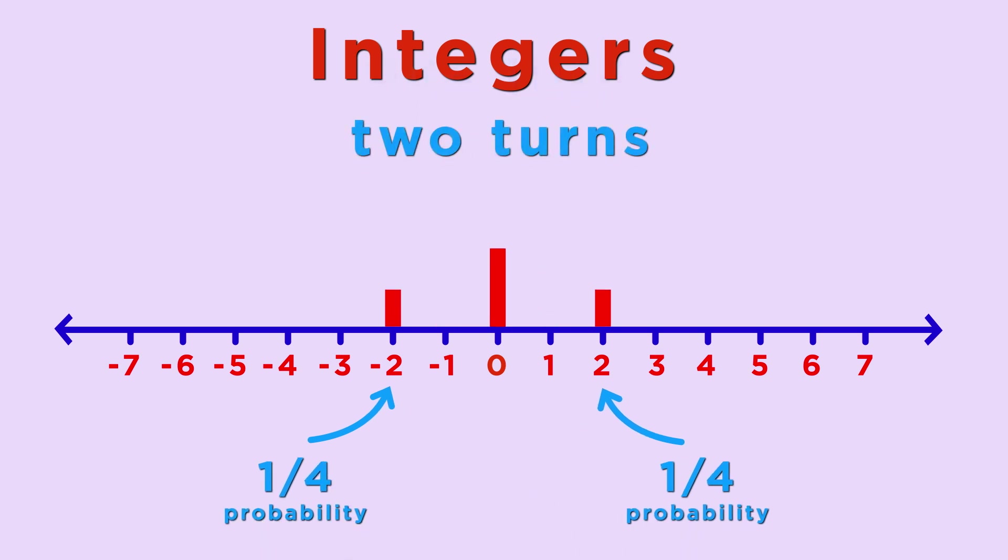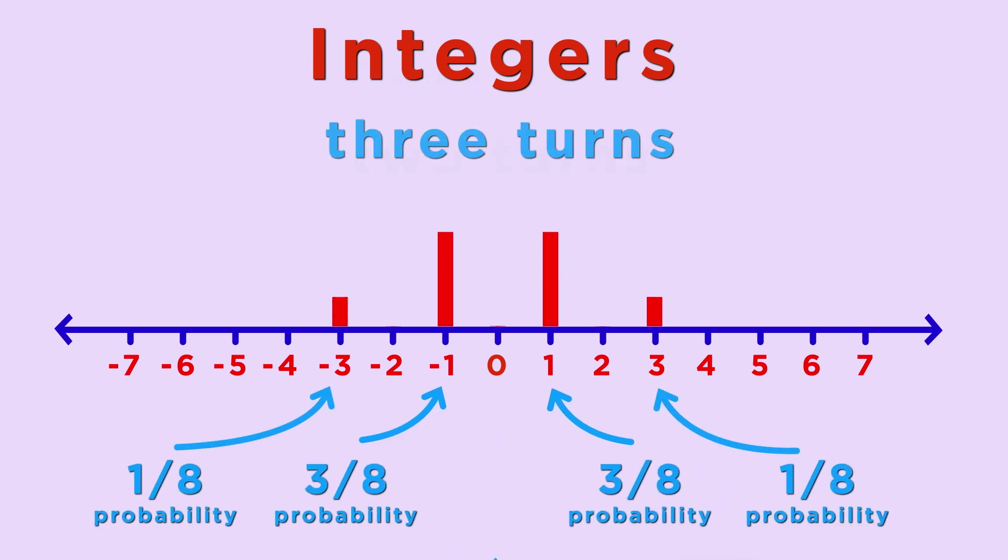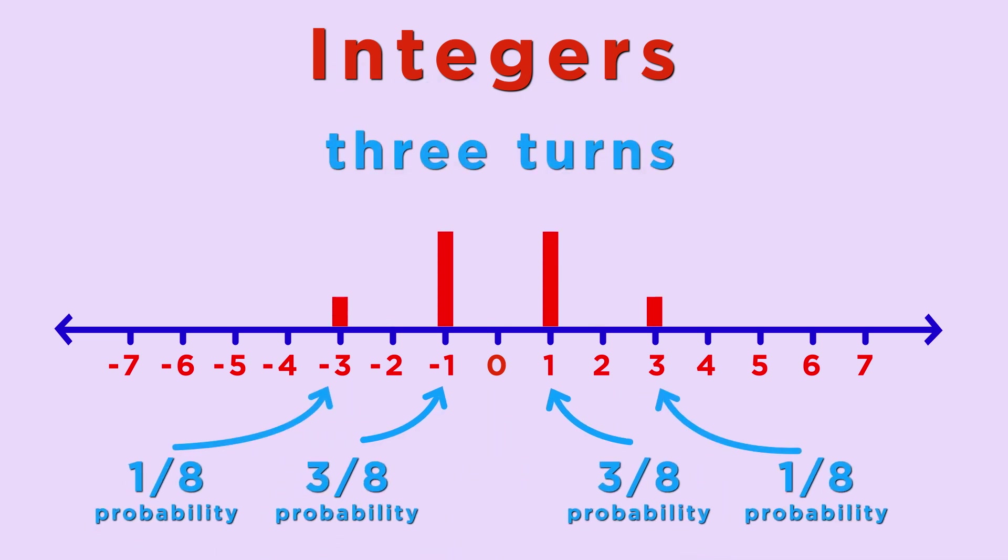After two turns, there's a one-quarter chance you're standing on minus two, a one-quarter chance you're standing on plus two, and a one-half chance it's zero. After three turns, the odds are one-eighth at minus three, one-eighth at plus three, three-eighths at minus one, and three-eighths at plus one.